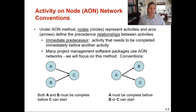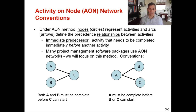Activity on node network conventions: under the AON method, nodes — which are circles — represent activities, and arcs — which are arrows — define the precedence relationship between the activities. We're only going to use AON network diagrams, not activity-on-arrow diagrams. We use nodes because they're easier and you can follow along with them better than with arrows.